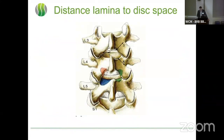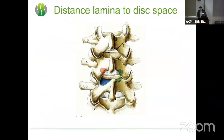We use the endoscope in all different areas of the spine — from the front, the back, and the side. In the cervical spine, we have anterior and posterior approaches. The anterior approach is more common in Korea and the Asian region, where you go through the disc. We can also use it in an extrapleural way on the thoracic spine, and we can use it in the lumbar spine.